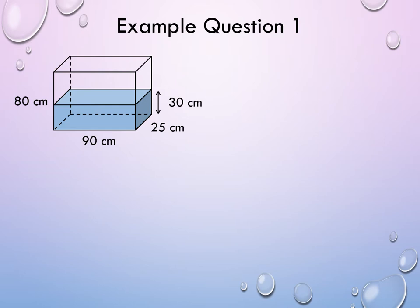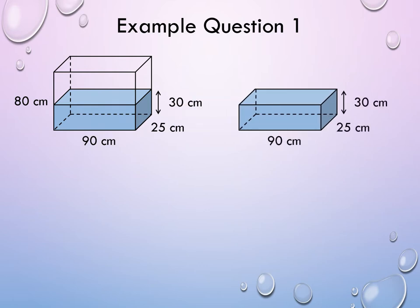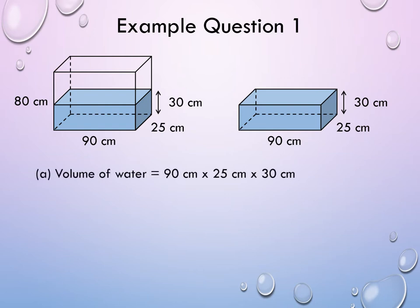For part A, notice that the water in the tank looks like a cuboid. So, we can use the formula for volume of a cuboid to find the volume of water in the tank. The volume of water is equal to 90 centimeters times 25 centimeters times 30 centimeters, and we get 67,500 cubic centimeters. This is equal to 67 liters and 500 milliliters. And that is the answer for part A.